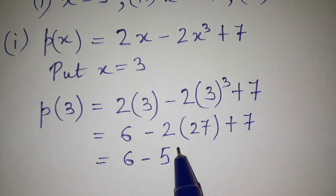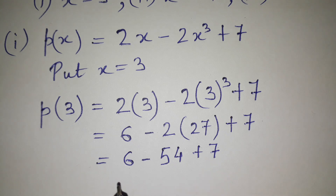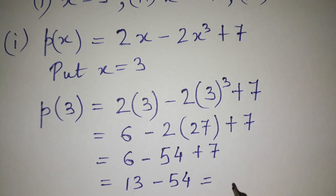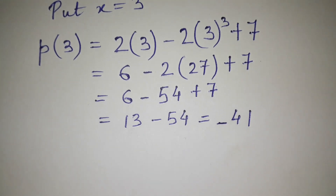We have 6 minus 54 plus 7. Adding 6 and 7 gives 13, and 13 minus 54 gives negative 41, because the bigger number is 54 and the sign follows the bigger number. So p(3) equals minus 41.